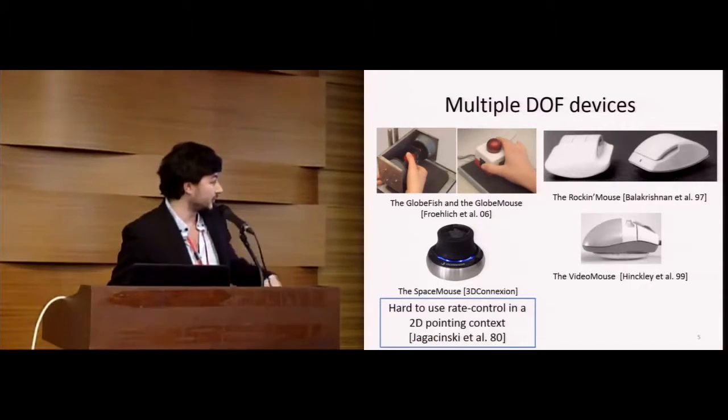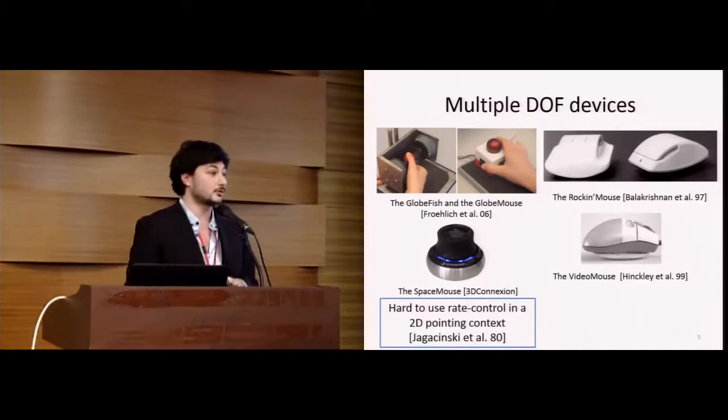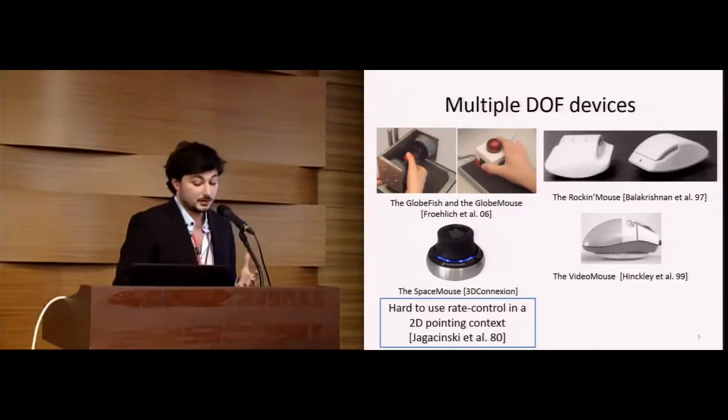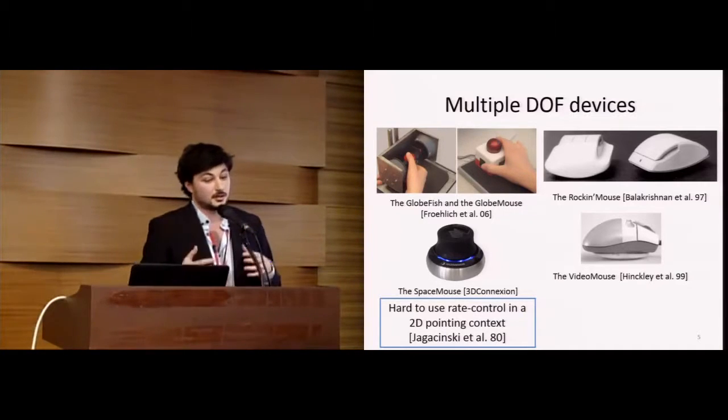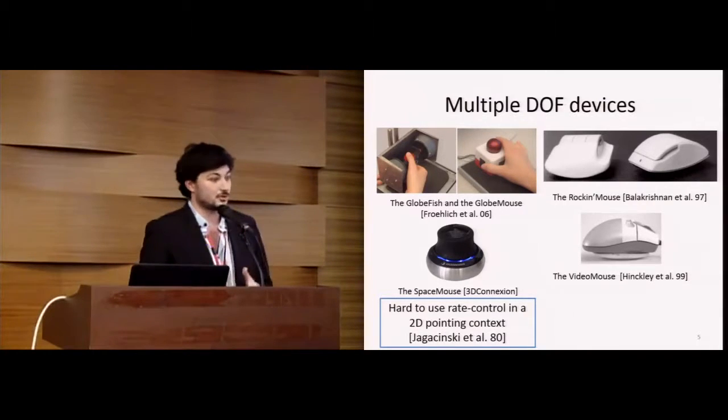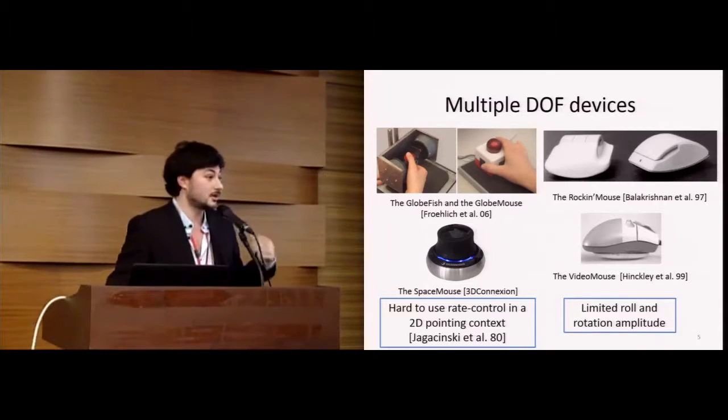Concerning the GlobeFish, GlobeMouse, and SpaceMouse, the main problem with those devices is that they offer rate control mode to manipulate an object. And in 2D pointing tasks, rate control is less usable than position control. And concerning the Rockin Mouse and the VivoMouse, they offer limited roll and rotation amplitude.